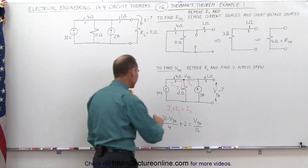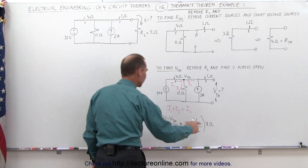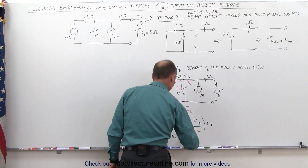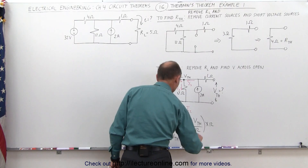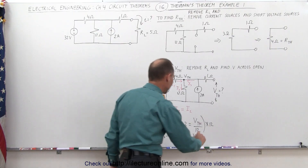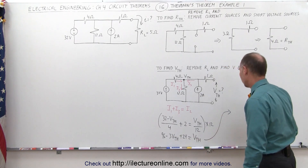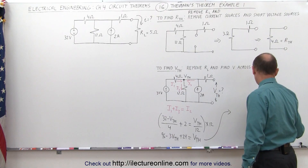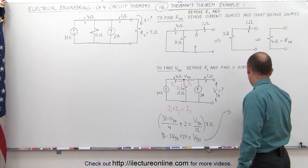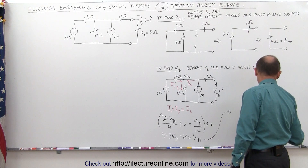We solve by multiplying both sides of the equation by 12. 4 goes into 12 three times, so 3 times 32 is 96, minus 3 times V_Thevenin, plus 2 times 12 which is 24, equals V_Thevenin. Moving all V_Thevenin terms to one side gives 4 times V_Thevenin. On the left side, 96 plus 24 is 120. That means V_Thevenin equals 120 divided by 4, which equals 30 volts.